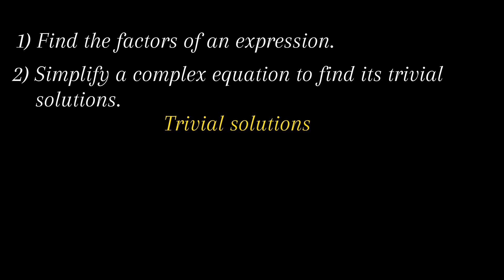For example, consider an expression 2x plus 3. If this expression is equated to 0, that is 2x plus 3 equals 0, and afterwards the value of variable x is figured out by rules of transposing, we get x equals minus 3 by 2. Thus minus 3 by 2 is the trivial solution of the given equation.